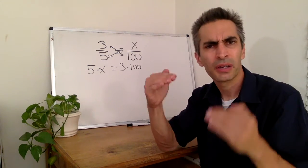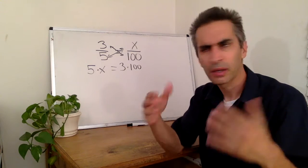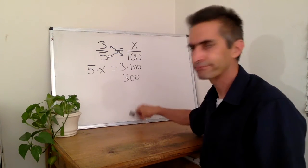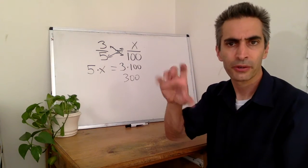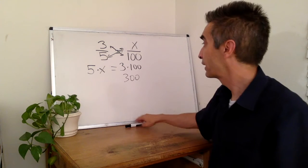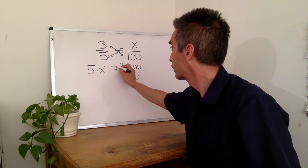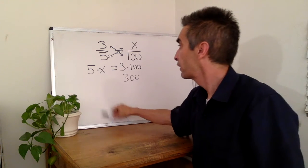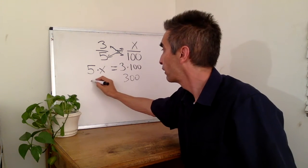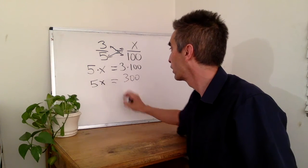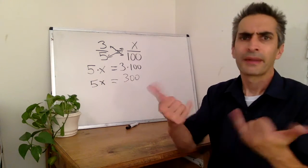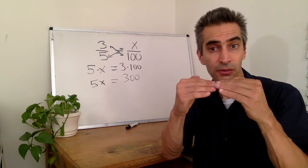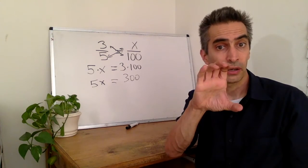Three times 100 equals three-hundred. Now, five-x equals three-hundred.